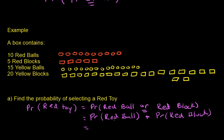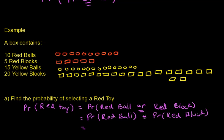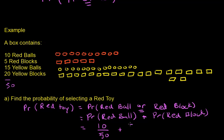So what's the probability of getting a red ball? We're going to use the classical approach to probability — count the number of red balls in the sample space and divide by the total number of possibilities. There are 10 red balls and 50 toys total, so 10 divided by 50. The probability of getting a red block is 5 out of 50. So there are 15 out of 50 red toys. That adds up to 15 out of 50, which equals 0.3. The probability of getting a red toy is 0.3.